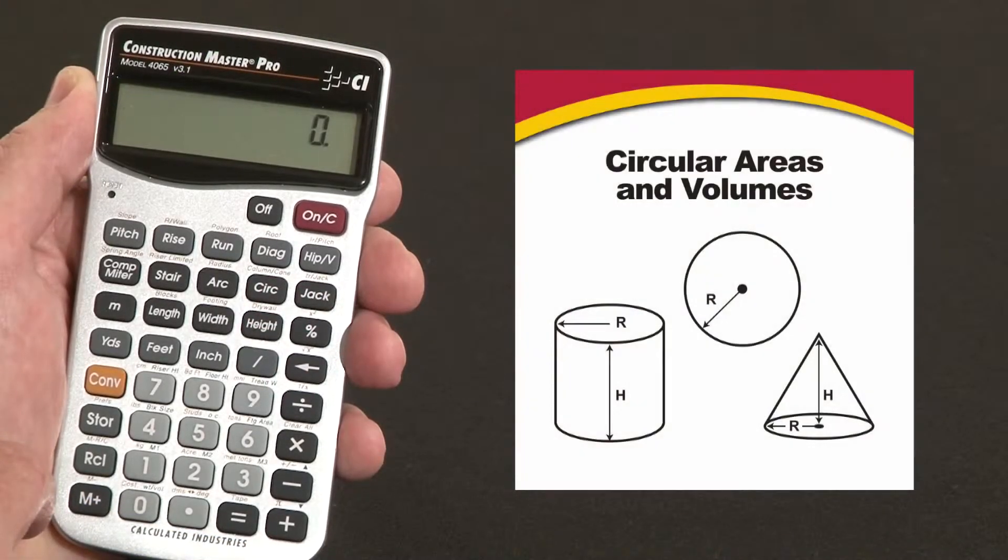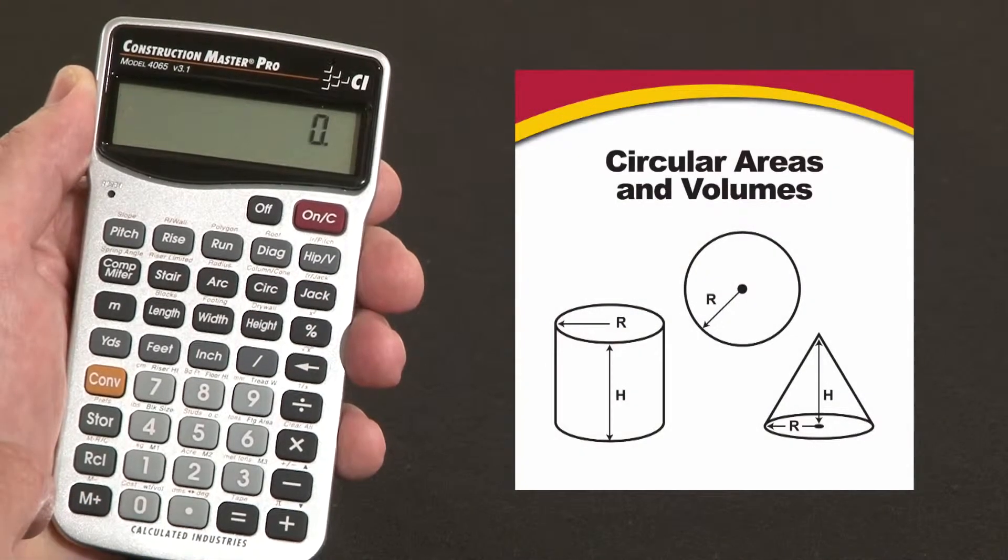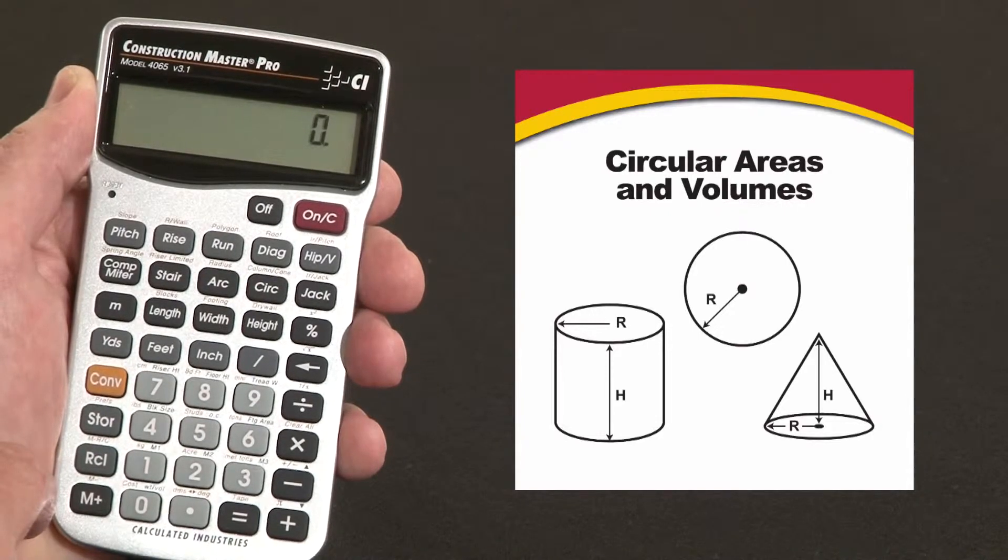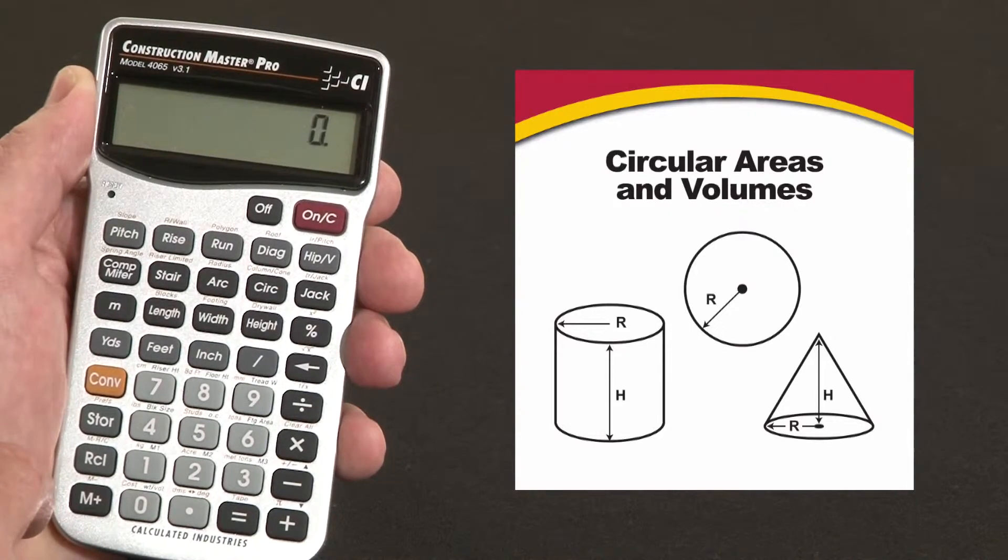Now let me show you how to calculate circular areas, volumes, and arc lengths on the Construction Master Pro. Keep in mind, if you're using the trig model or desktop model, the keystrokes are exactly the same.